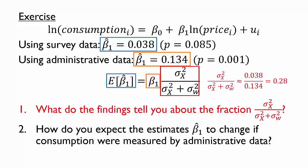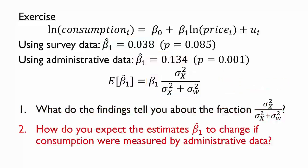Let's now turn to the second question. If it were possible to measure consumption using administrative data instead of survey data, we would presumably get more accurate information. However, household consumption is the model's dependent variable, and we saw that classical measurement error in the dependent variable does not cause bias. So using more accurately measured consumption might reduce the standard errors of the estimates of beta 1, but we should not expect our estimates to change substantially in either direction.